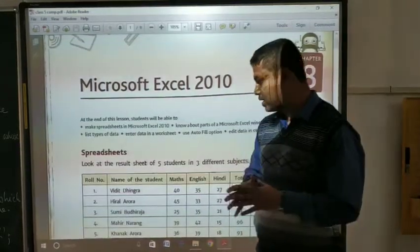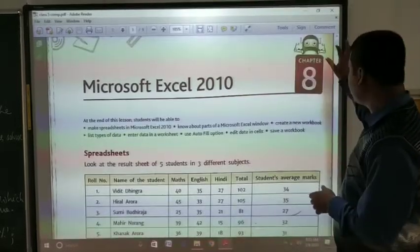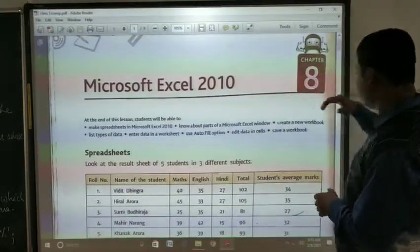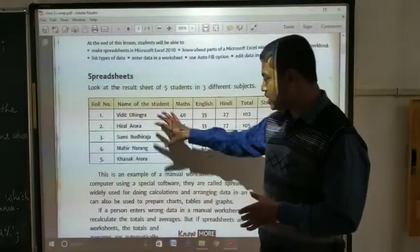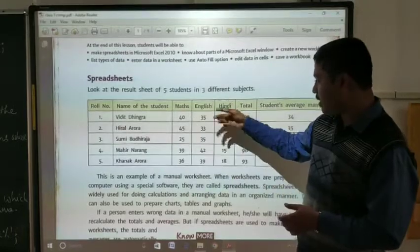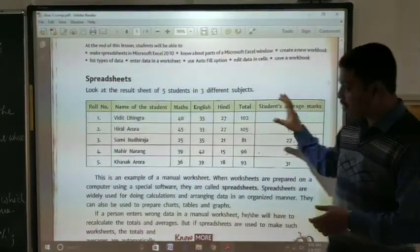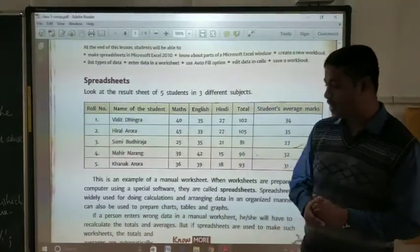So let us first start about what is Microsoft Excel. In Microsoft Excel we will be getting a spreadsheet. So the spreadsheet is like, we can see this is a different sheet. We have the row number, the name of the student, maths, English, Hindi, total and students average. So these all things can be done in a workbook. Also we can consider it as a spreadsheet.